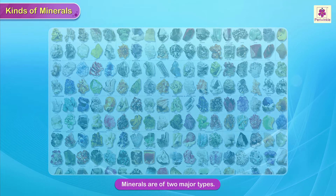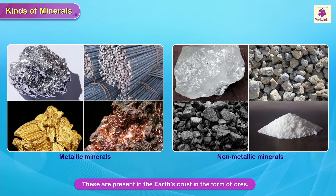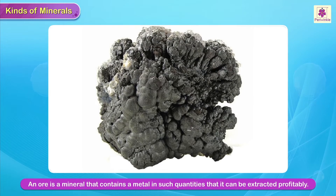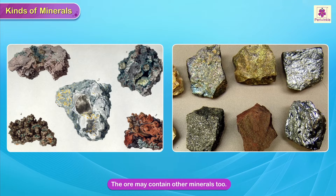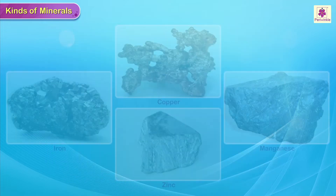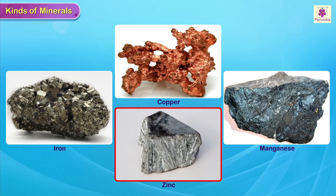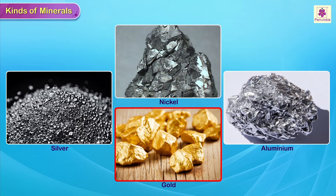Minerals are of two major types: metallic minerals and non-metallic minerals. These are present in the earth's crust in the form of ores. An ore is a mineral that contains a metal in such quantities that it can be extracted profitably. The ore may contain other minerals too. Metallic minerals are minerals from which metals are extracted. Iron, copper, manganese, zinc, silver, nickel, aluminium and gold are examples of metals extracted from metallic minerals.